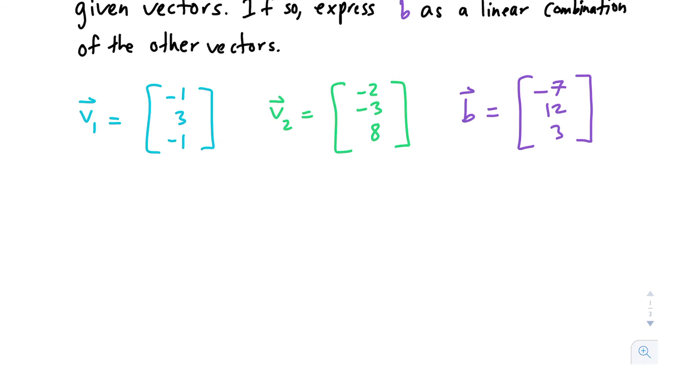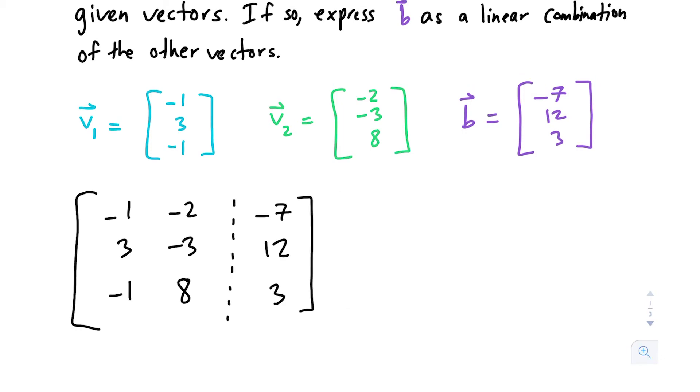All right, so we know that we want a linear combination of v1 and v2, so we're going to put those numbers inside of this matrix. What differentiates b from v1 and v2 is it's the result vector. We're trying to find a linear combination to get it. This is what we call an augmented matrix, and it's called that because typically the last column is the result matrix. In this case, we're trying to reach negative 7, 12, and 3.